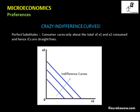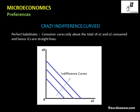In this lecture, we are going to look into some of the crazy indifference curves. First, let us take the case of perfect substitutes. Suppose there are two goods, good one and good two.